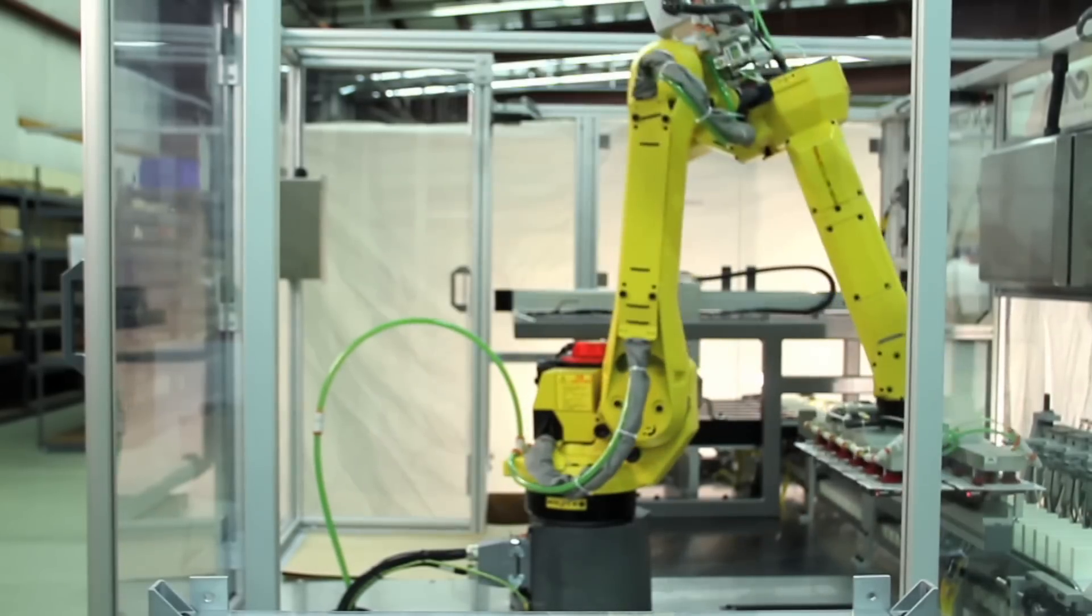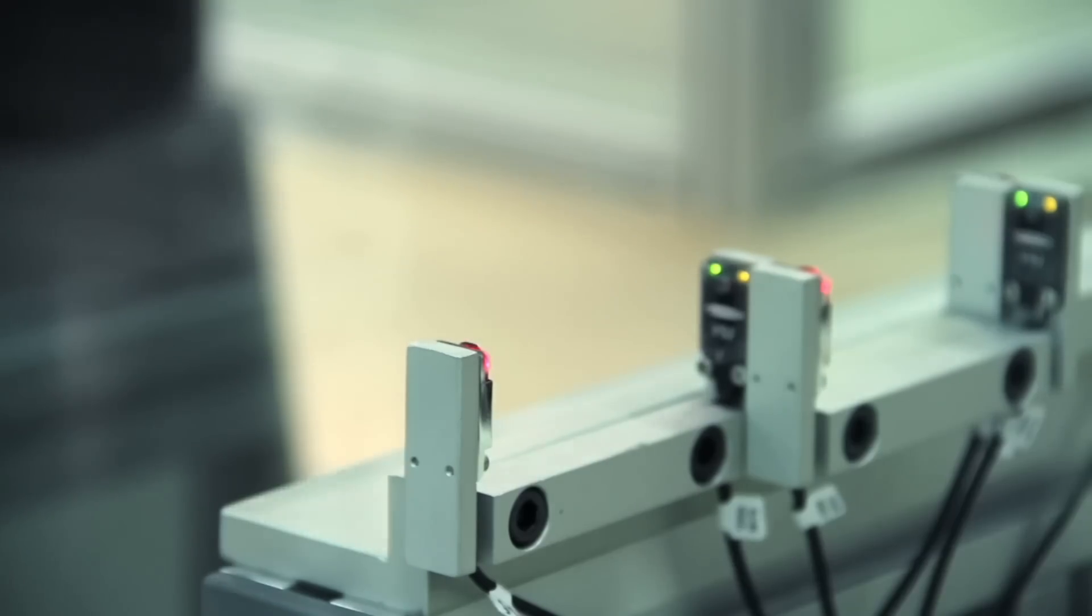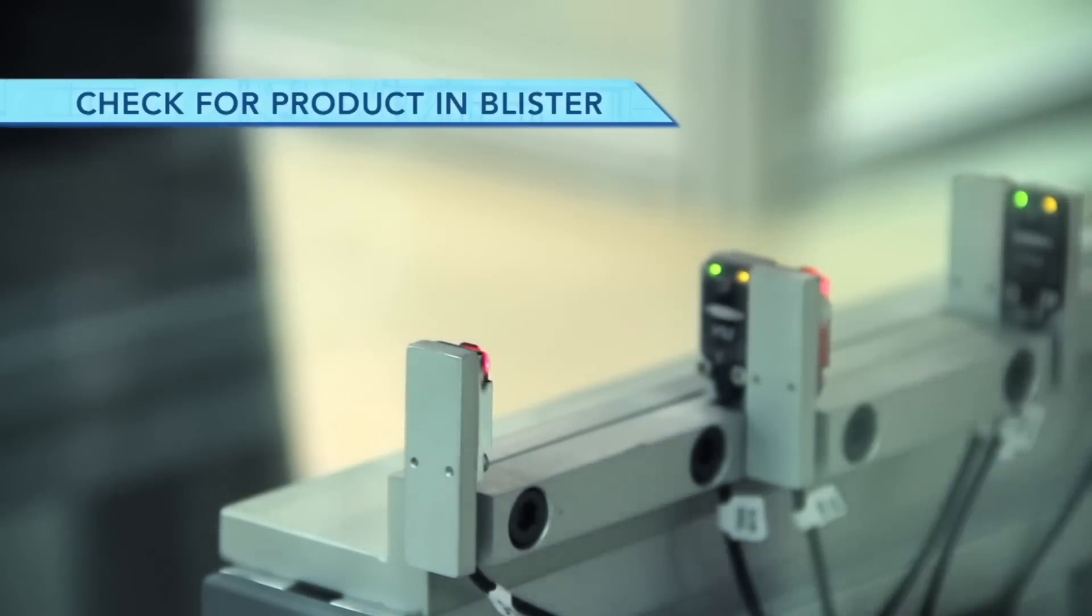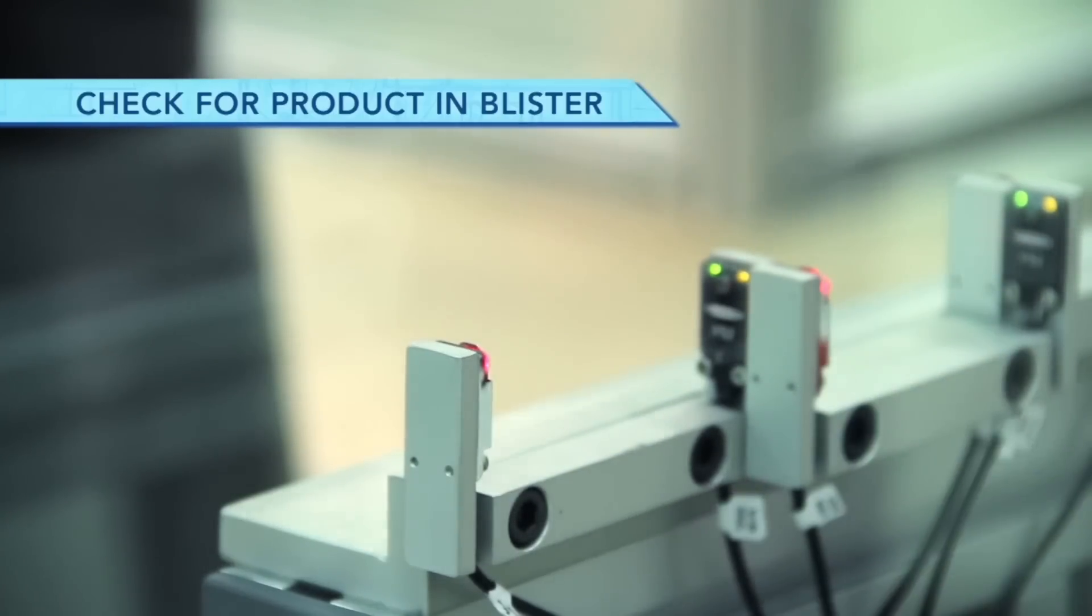The robot's end-of-arm tooling passes each row of cards through sensors to ensure that the product is in each blister.